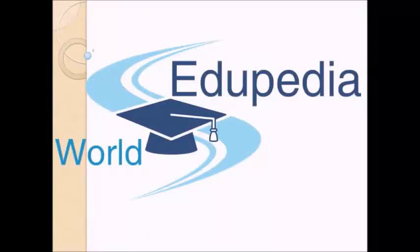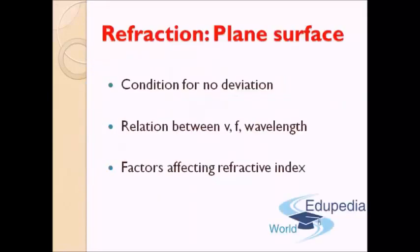Welcome back to Eripedia World. Today we will continue our discussion about refraction, and today's discussion will be focused on the conditions for no deviation — meaning scenarios in which light does not bend toward the normal. We will also see the relationship between velocity, wavelength, frequency, and change in direction, and we will close by understanding the factors which affect the refractive index of the medium.